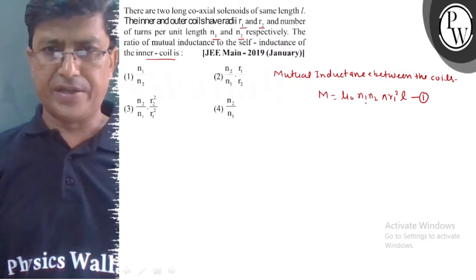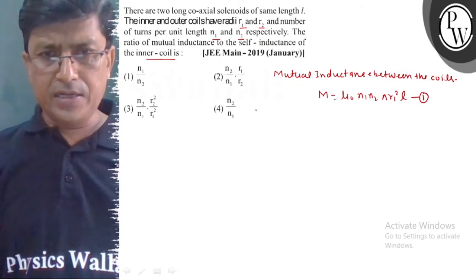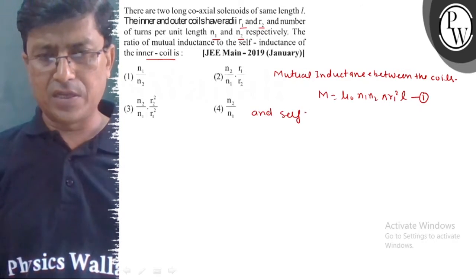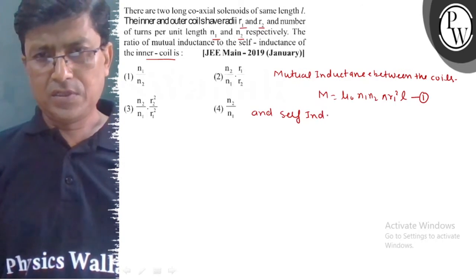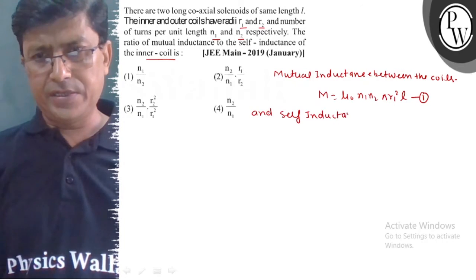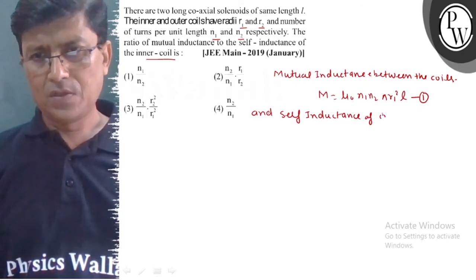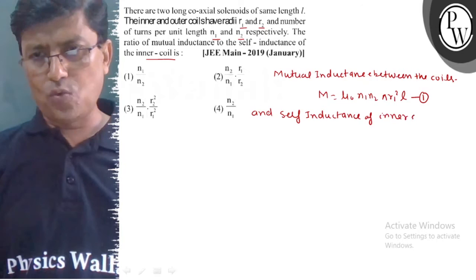It is equal to mu0 N1 N2 pi R1 square over L. The self-inductance of inner coil: